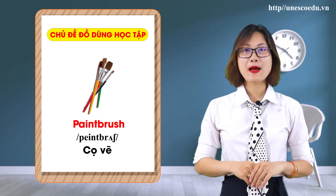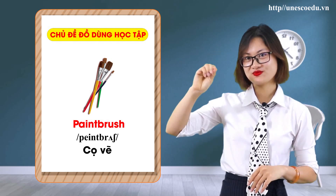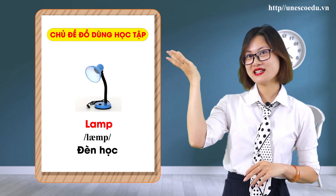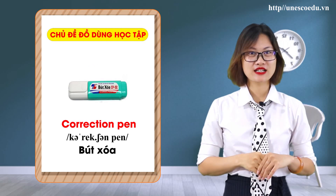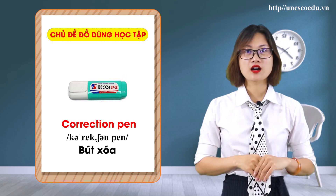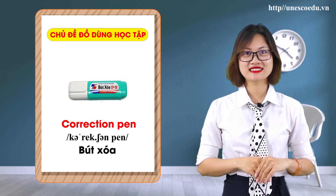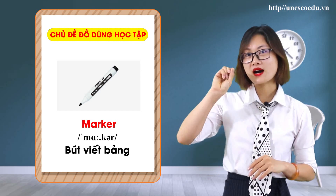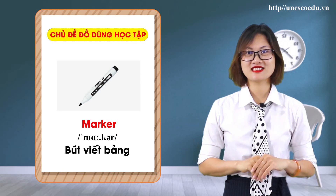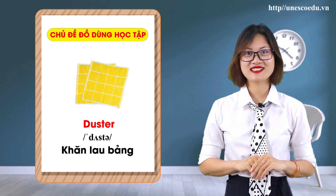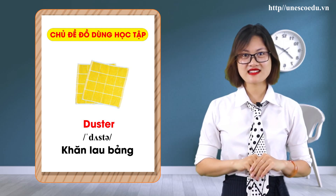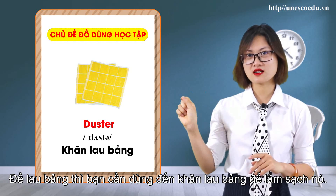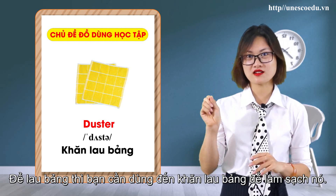Paintbrush. Lamp. Correction pen. Marker. Duster. You use the duster to clean the board — when you use chalk on the board, you need to use the duster to clean it.